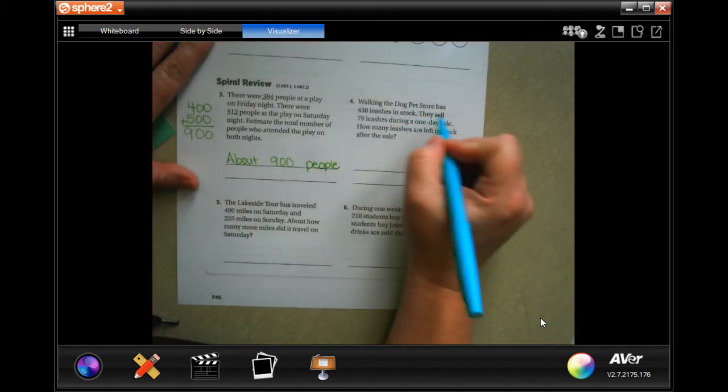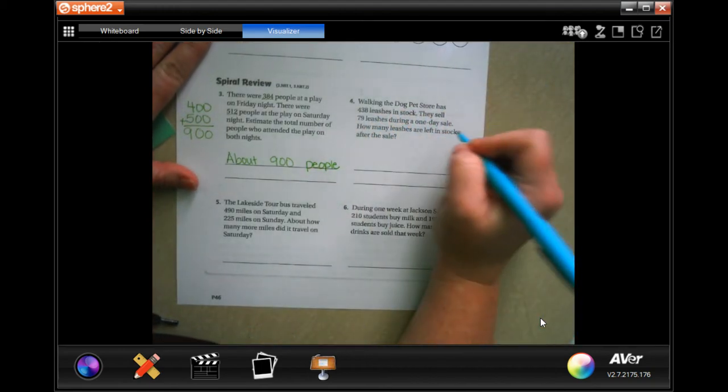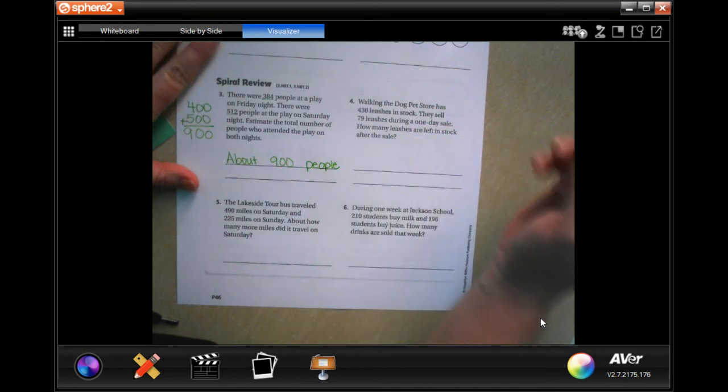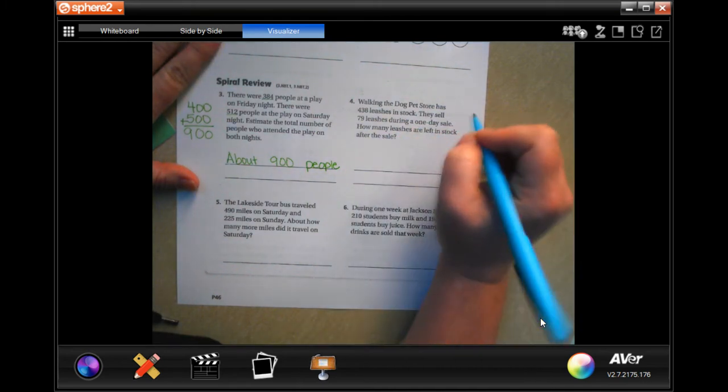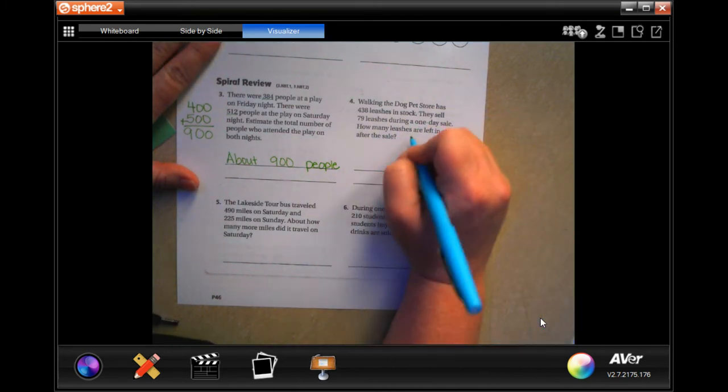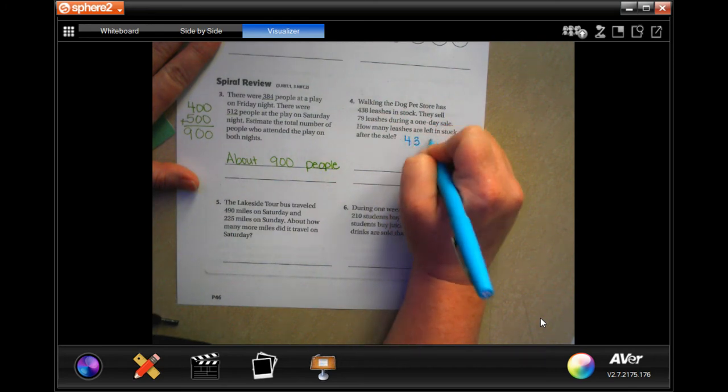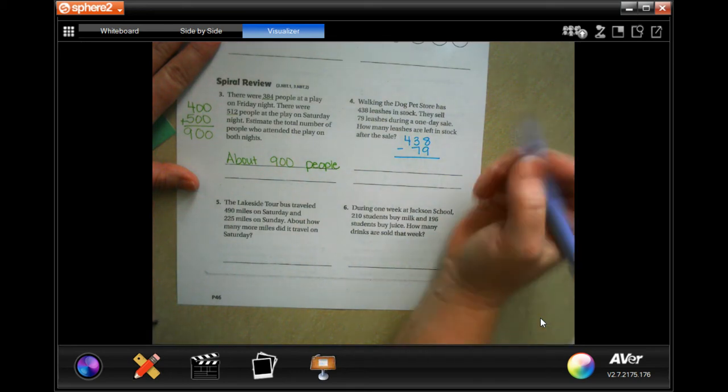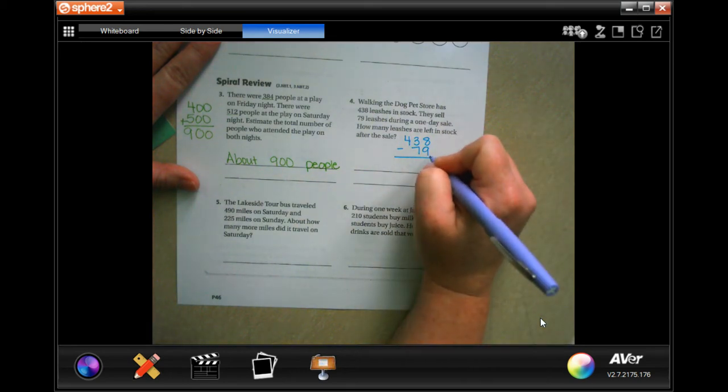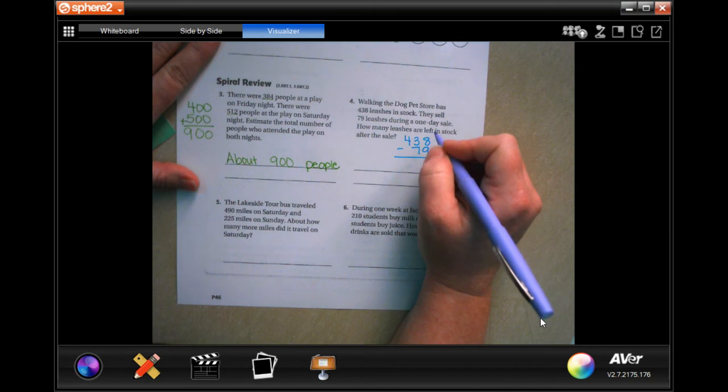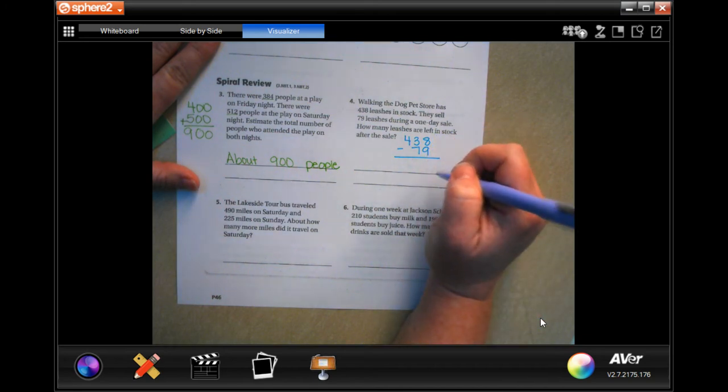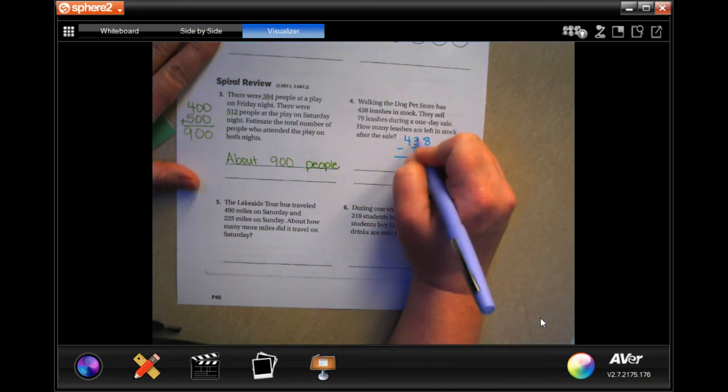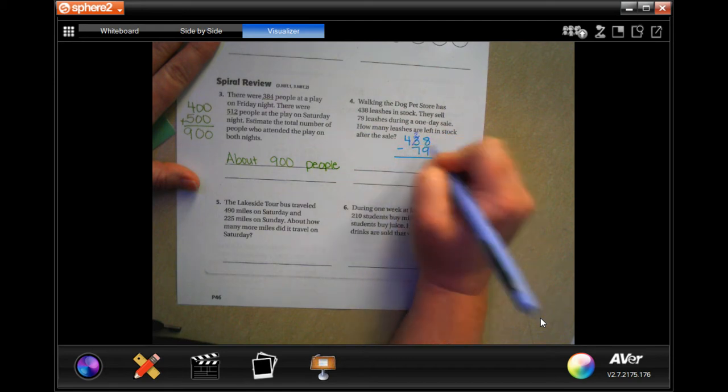All right. Walking the dog pet store has 438 leashes in stock. They sell 79 leashes during a one-day sale. How many leashes are left in stock? So 438 minus 79. Okay, now eight cannot take away nine and we never, ever, ever subtract up. We only go down.